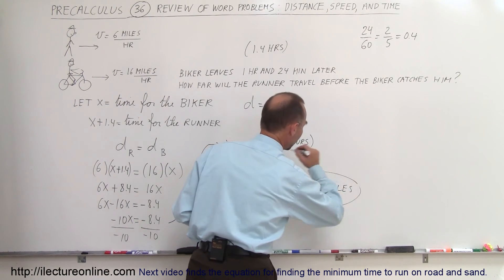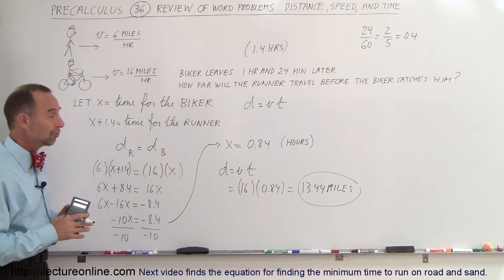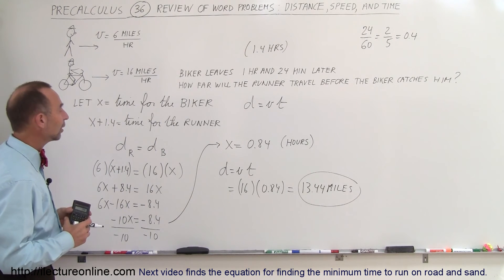And that would be the distance covered by the biker before catching the runner, and that of course must be the distance the runner traveled. That's quite a run, that's slightly over a half a marathon, so that's a good run for this runner.